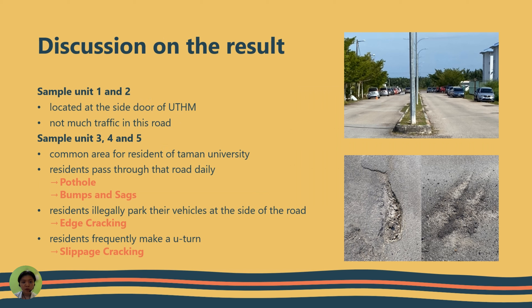I'm Jovita Tan, metric number AF210088, and I will talk about the discussion on the results. Sample units 1 and 2 are located at the side road of UTHM, used mainly by UTHM students and staff, so there is not much traffic on this road. Sample units 3, 4, and 5 are in a common area of residents of Taman University.